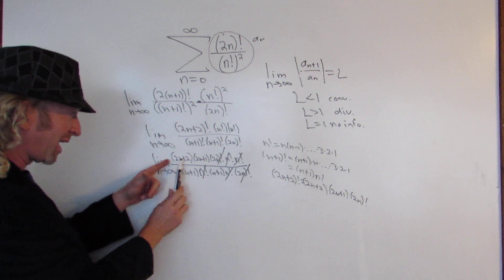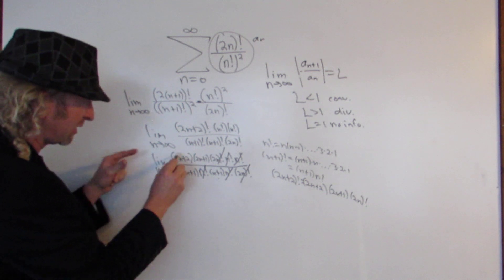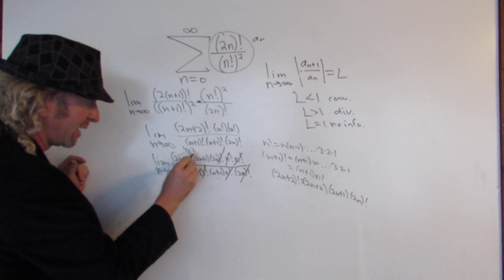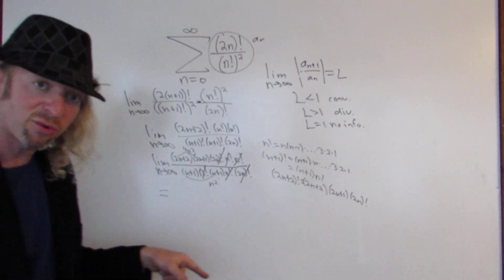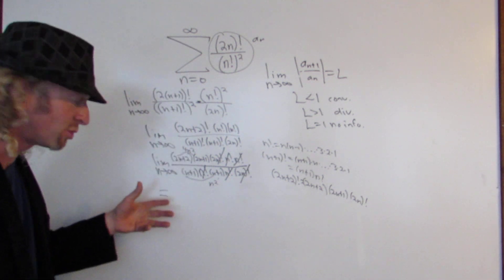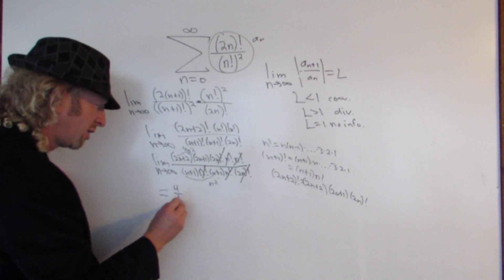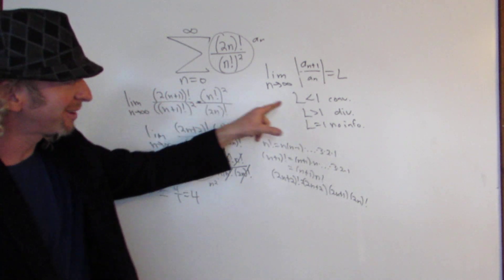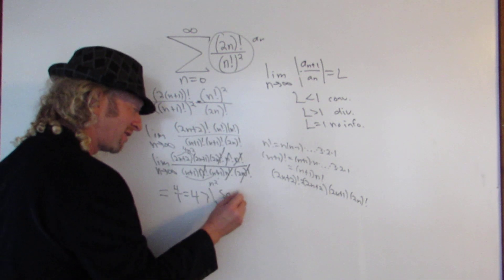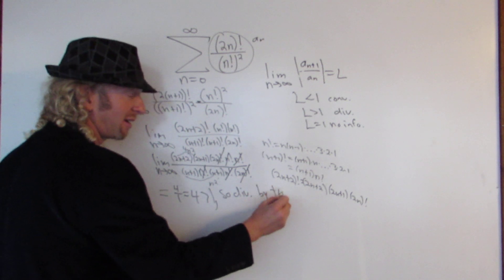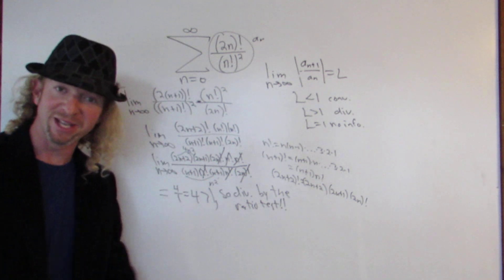Now we have essentially a quadratic: the leading coefficient in the numerator is 4n² and in the denominator is n². Because they have the same growth rate, the limit is the ratio of the leading coefficients: 4 over 1, which equals 4. That's bigger than 1, so our series diverges by the ratio test. What a nice problem. Until next time, take care!